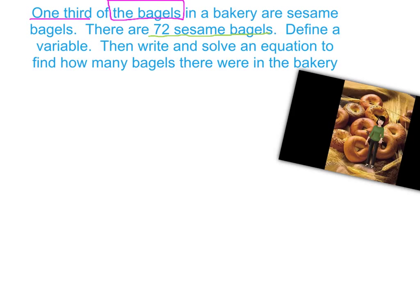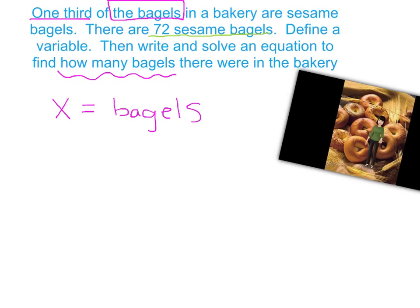Remember there are three steps. We have to first define the variable, so let's look at the question they're asking — how many bagels? Whatever question they're asking, that's where our variable comes in. So B stands for bagels. You don't have to use the letter B; if you want to use x for all of them, that's fine — I actually like x better because my b's sometimes look like sixes.